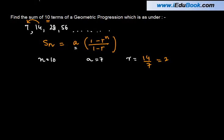Now, once we have got these values, we can simply put them in this equation. So, sum of first 10 terms of this geometric progression is equal to a, which is 7 times 1 minus r, which is 2, and n is 10. 2 raised to the power 10 divided by 1 minus r, which is 2.